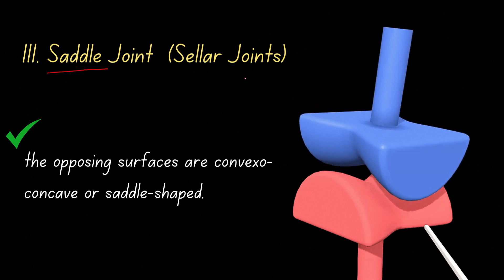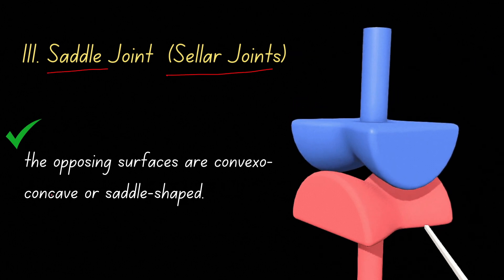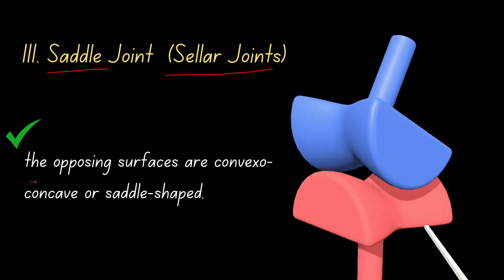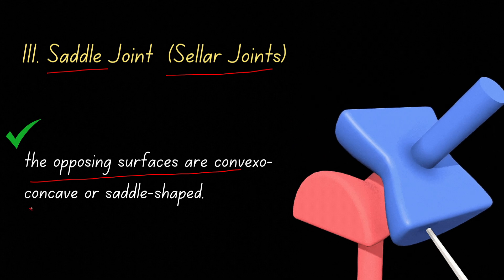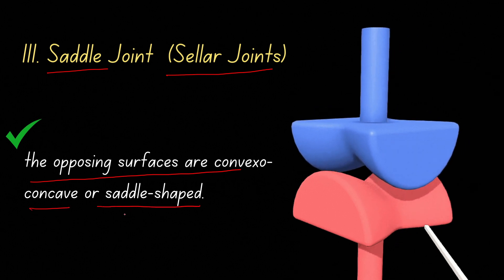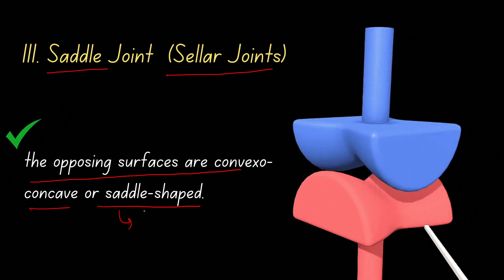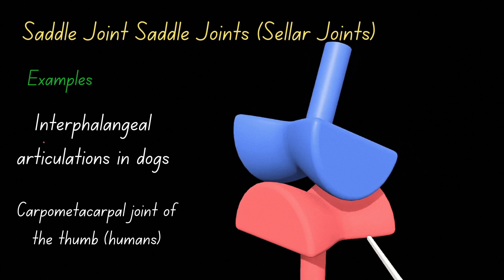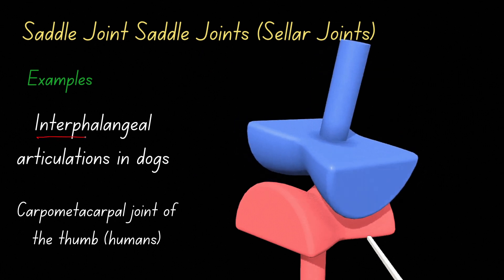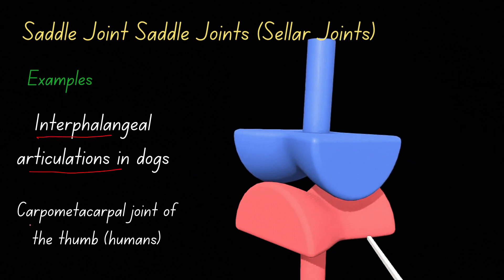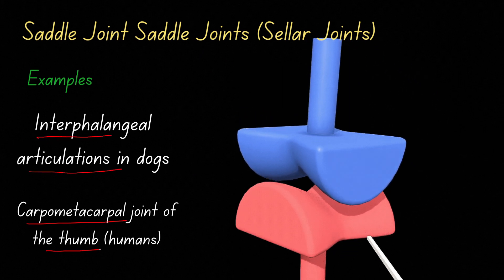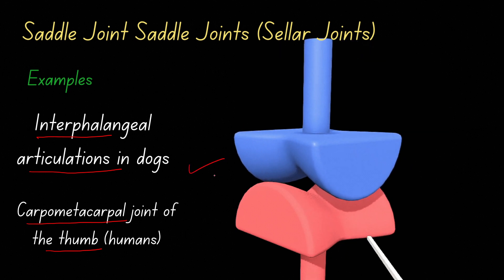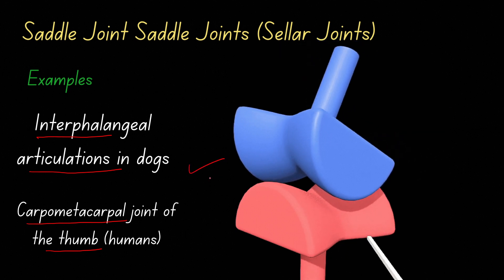The saddle joint, or sellar joint, has opposing surfaces that are convexo-concave, or saddle-shaped — like the saddle used on a horse. Examples include the carpometacarpal joint of the thumb and interphalangeal articulations. You can see the movement animation for the saddle joint here.